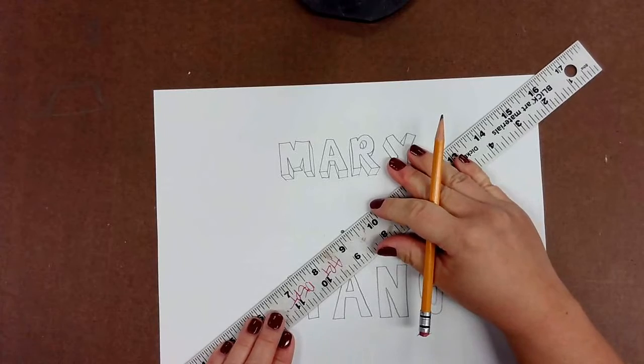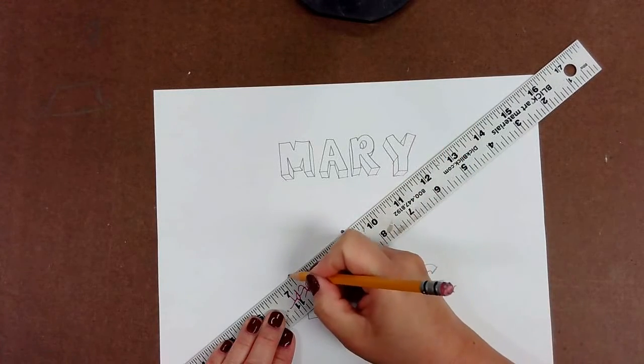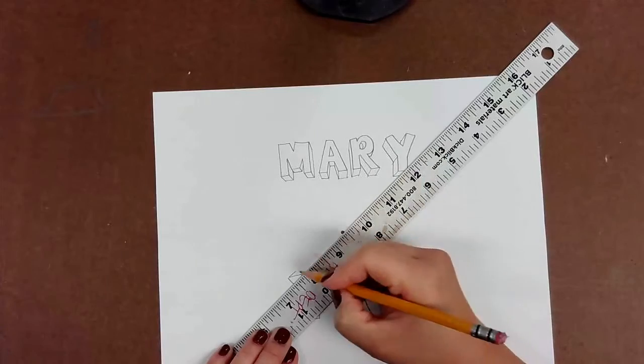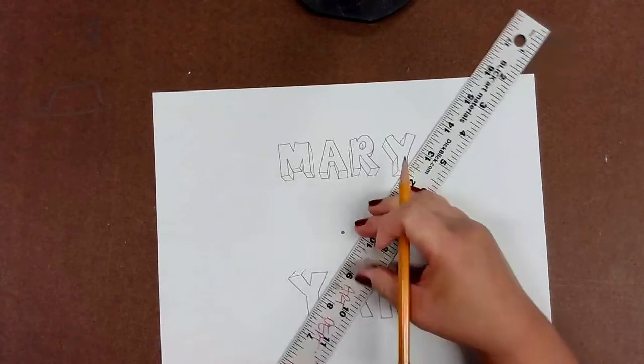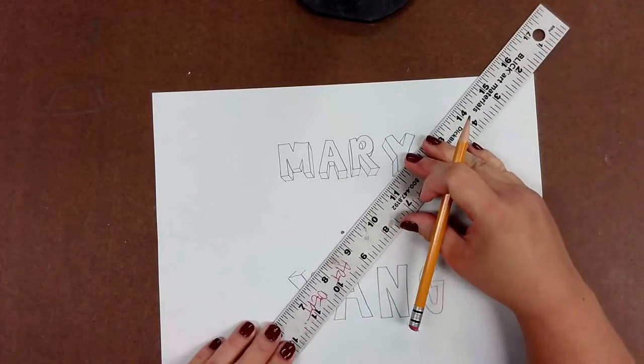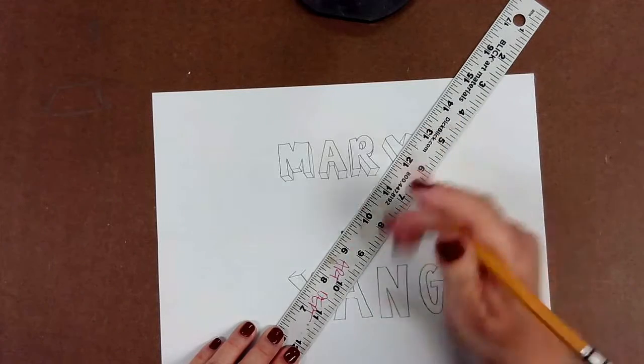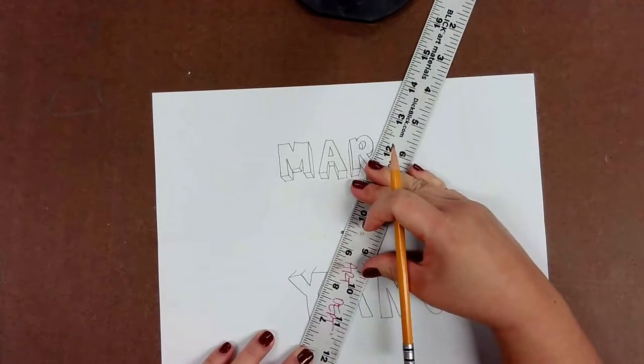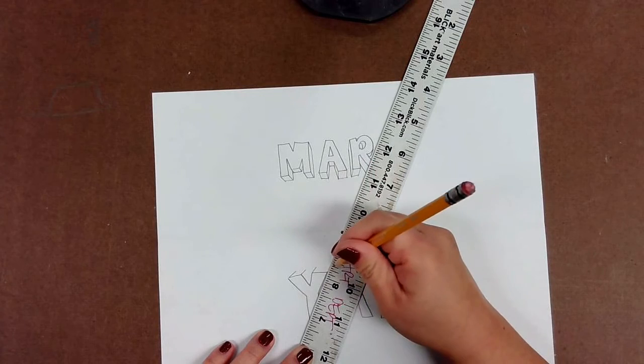Once you have the top letters completed and they have become three-dimensional, you're going to move your ruler down to the second half and you will do the same to the last name letters. Except this time, you're matching the corners and you're drawing your lines upward or towards the vanishing point.